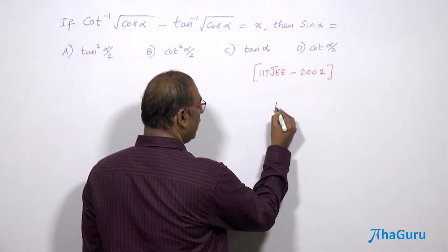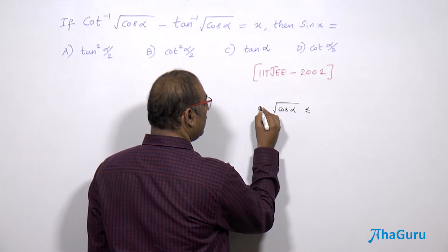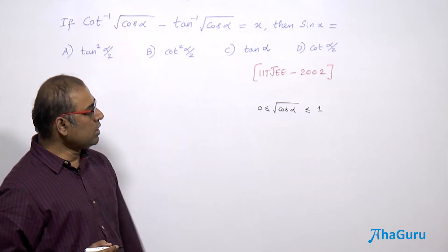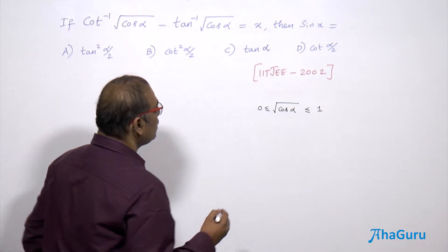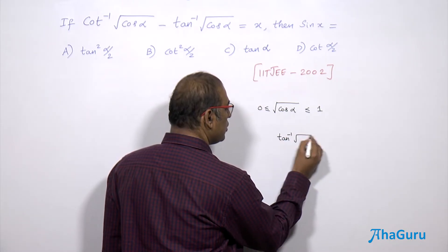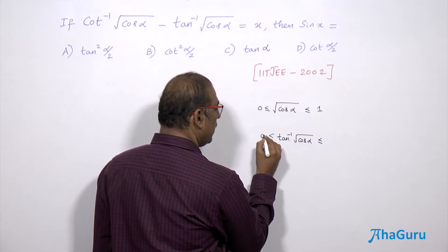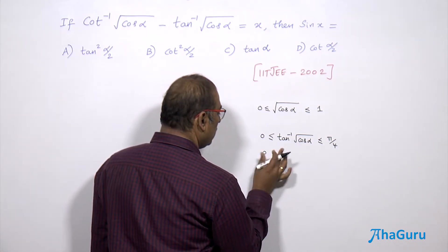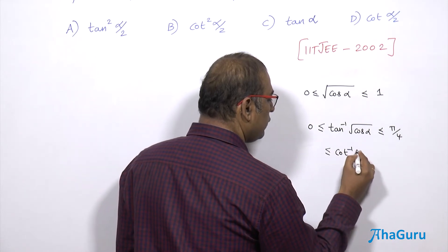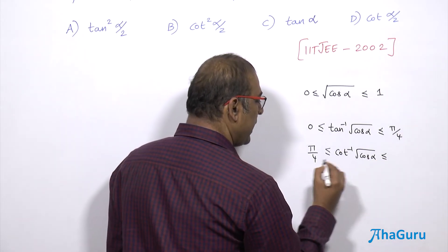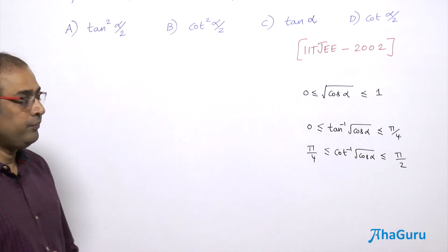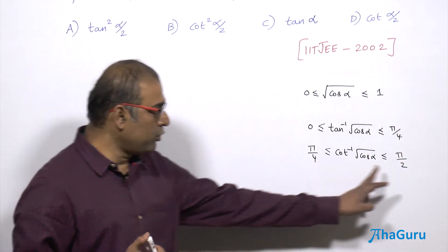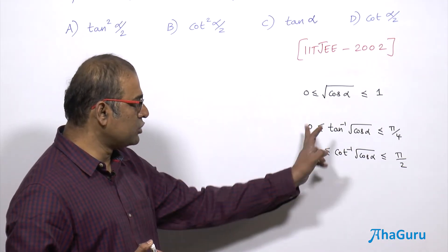√cosα ranges from 0 to 1 because cosα ranges from -1 to +1, but √cosα exists only when cosα is non-negative. So tan⁻¹(√cosα) ranges from 0 to π/4, and cot⁻¹(√cosα) ranges from π/4 to π/2, since cot of angles in that range gives values from 0 to 1 — that is the principal limit.